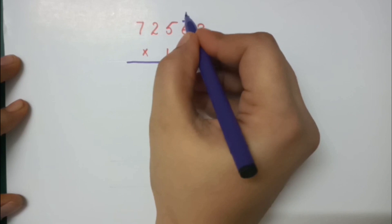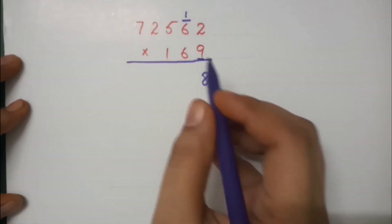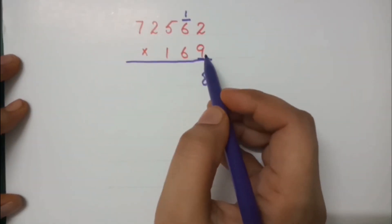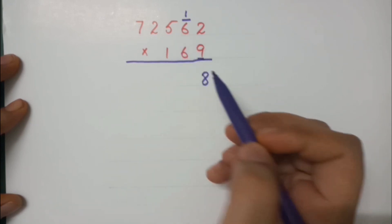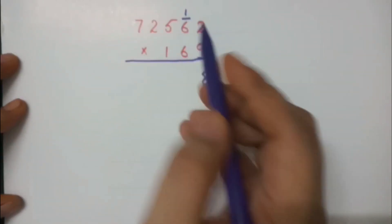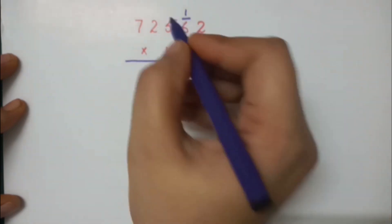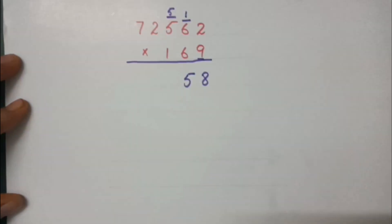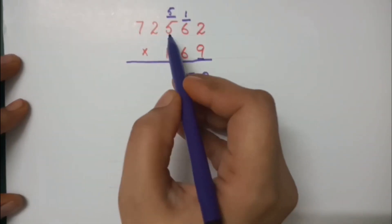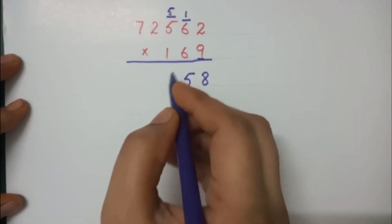The second digit is 6, so we multiply 9 with 6. 9 sixes are 54, plus 1 carry is 55 — write 5 here and 5 would be carry. Then the next digit is 5 again, so 9 fives are 45.